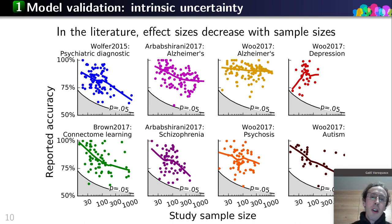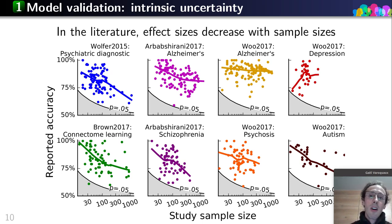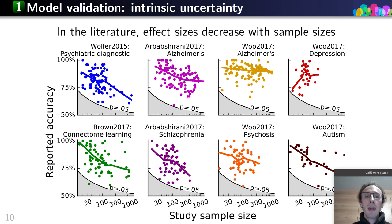A related and worrying trend in the brain imaging literature is that reported prediction accuracy of models for pathologies goes down with sample size — the more data people have, the less likely they are to report a good prediction accuracy. Given that arbitrary modifications can give seemingly good predictions on small datasets by chance, this trend is worrying. My conclusion is that we should, as much as possible, work on large datasets to have reliable evaluations of our prediction accuracy and be confident in our results.